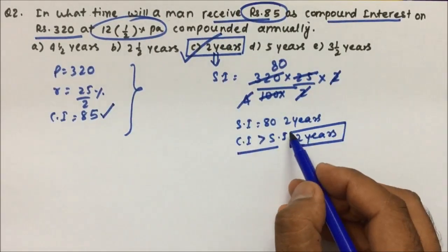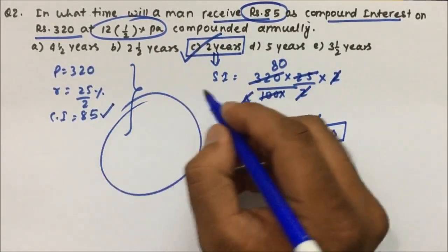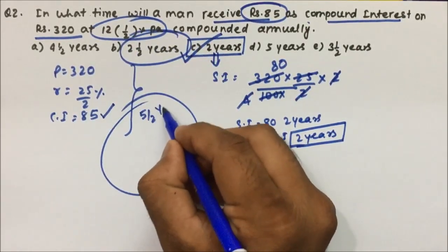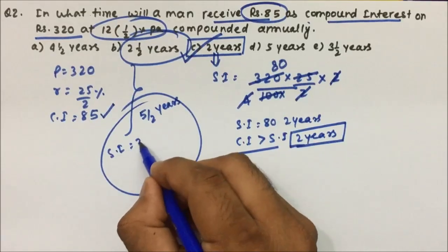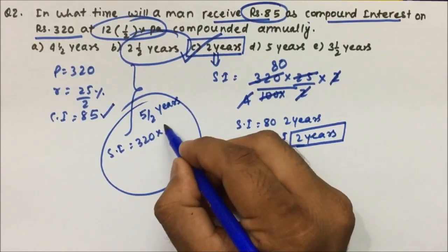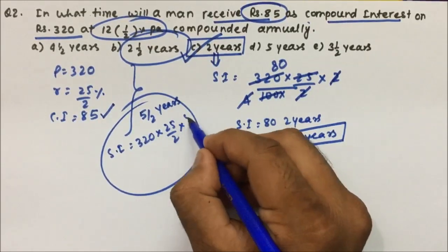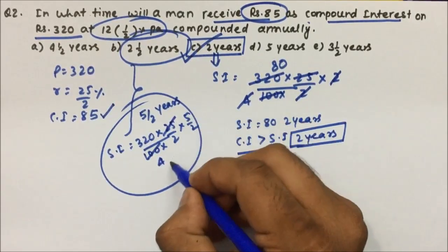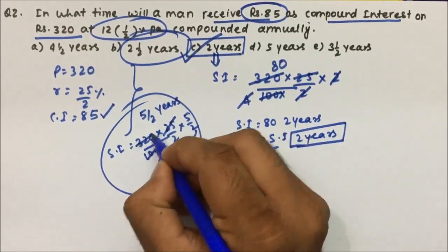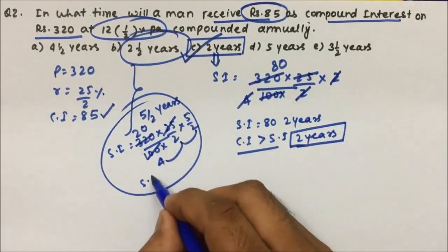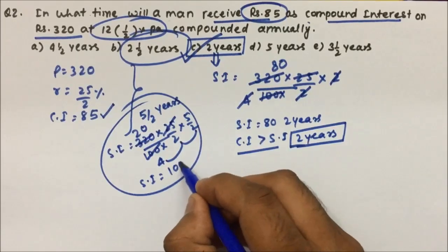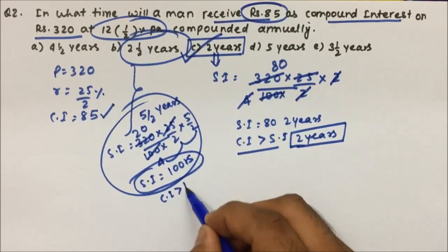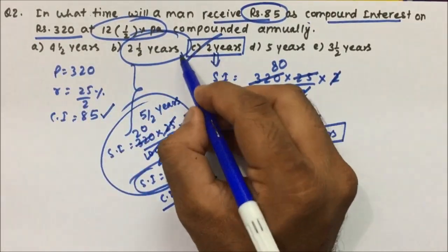To cross-verify, calculate for two and a half years (5/2 years). Simple interest = 320 × (25/2) × (5/2) ÷ 100. Simplifying: divides by 4 gives 20 times, so simple interest for 2 and a half years = 100 rupees. If simple interest itself is 100 rupees, compound interest will be more than 100 rupees. Since the given compound interest is only 85, the answer is 2 years — option C — not any other option.